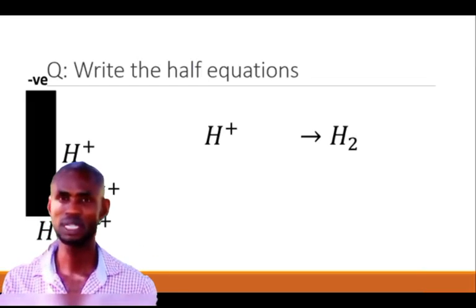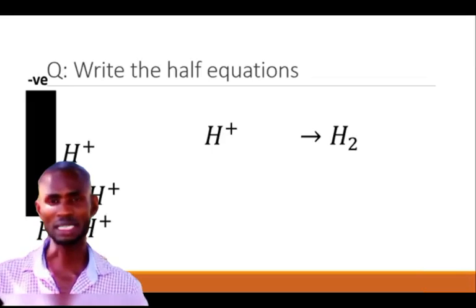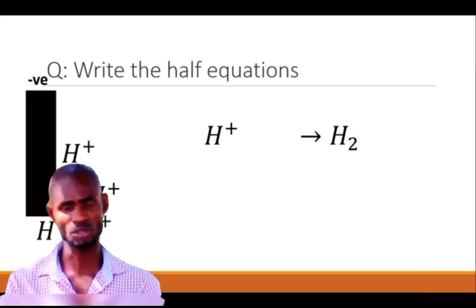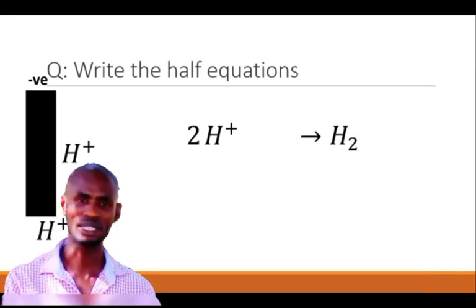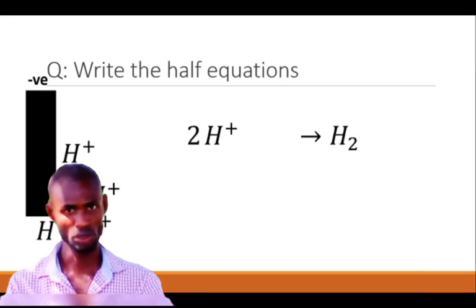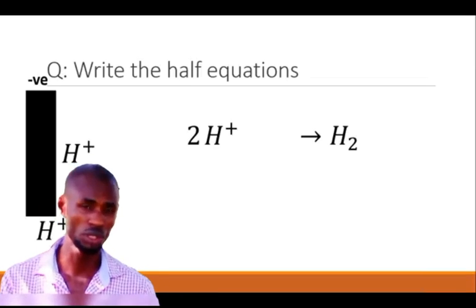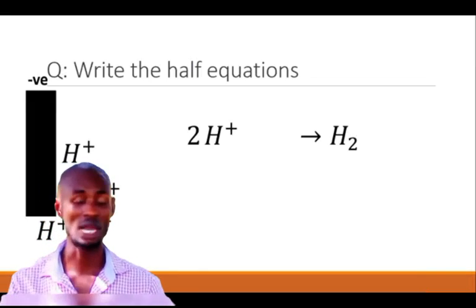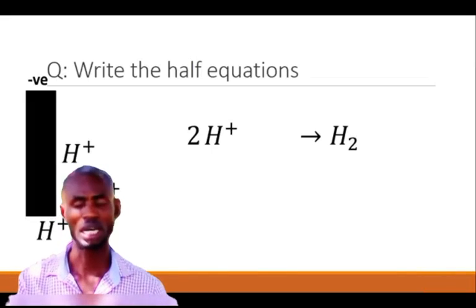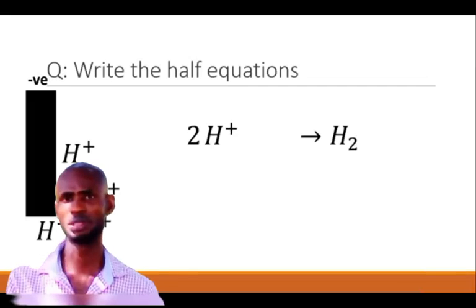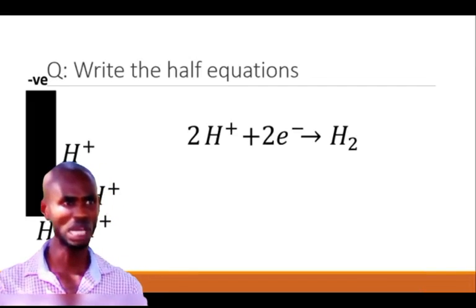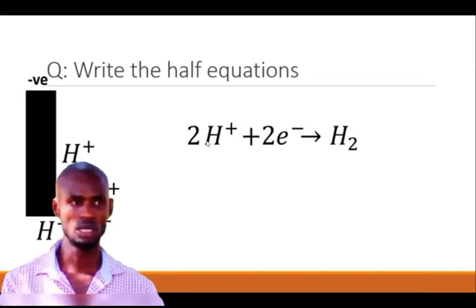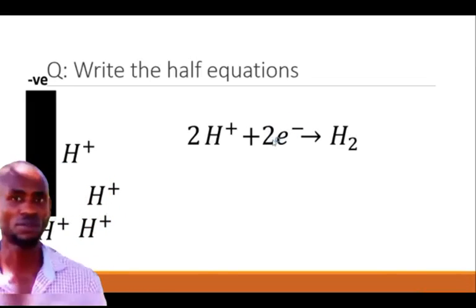There is something called CROA — C-R-A-O. C represents cathode and cathode is reduction. A-O represents anode and oxidation. So at the anode is oxidation and at the cathode is reduction. You need to learn how to write ionic equations for both the cathode and the anode. Watch out for a video on the applications of Faraday's law of electrolysis, because questions will involve those applications.